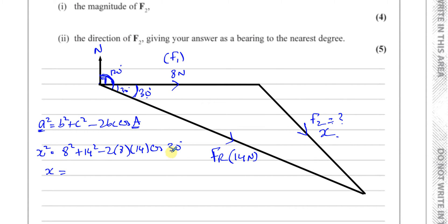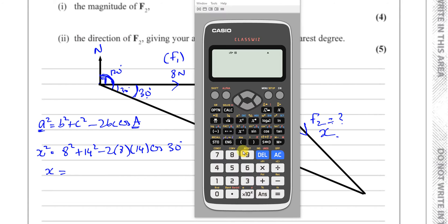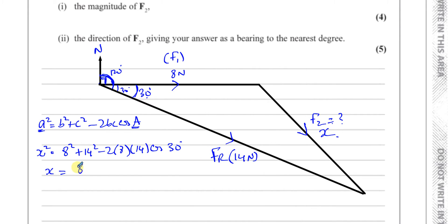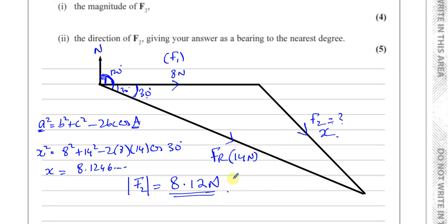Taking the square root of 8² + 14² − 2 × 8 × 14 × cos(30°) in the calculator, making sure we're in degree mode, gives us 8.1246. So the magnitude of F2 is equal to 8.12 newtons to 3 significant figures.